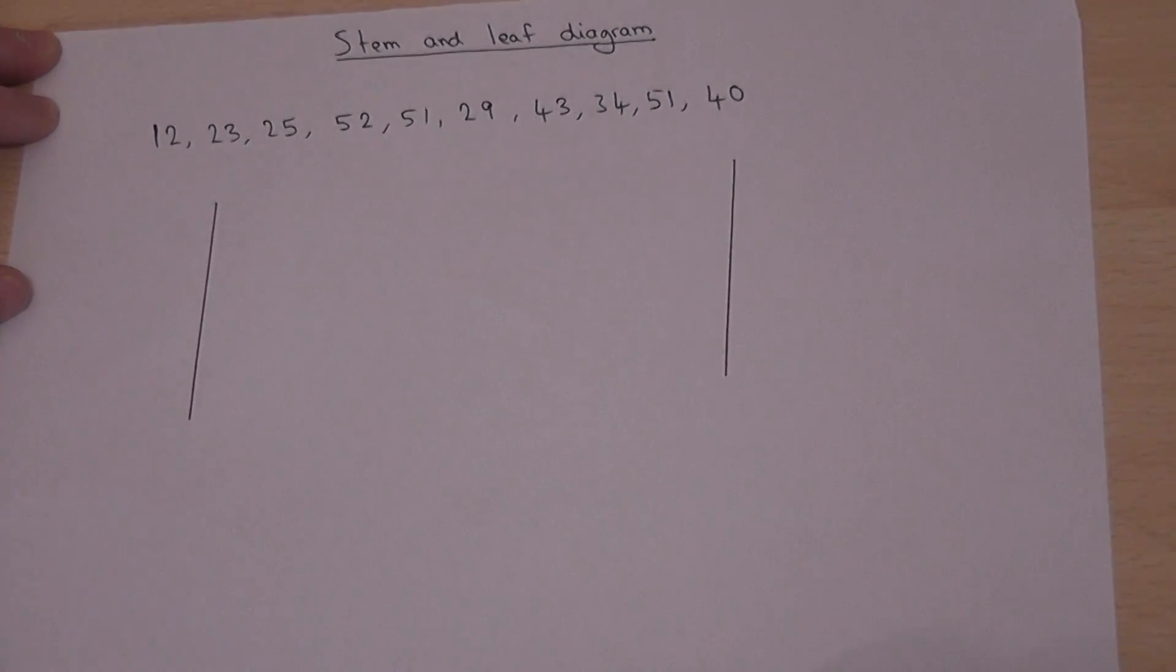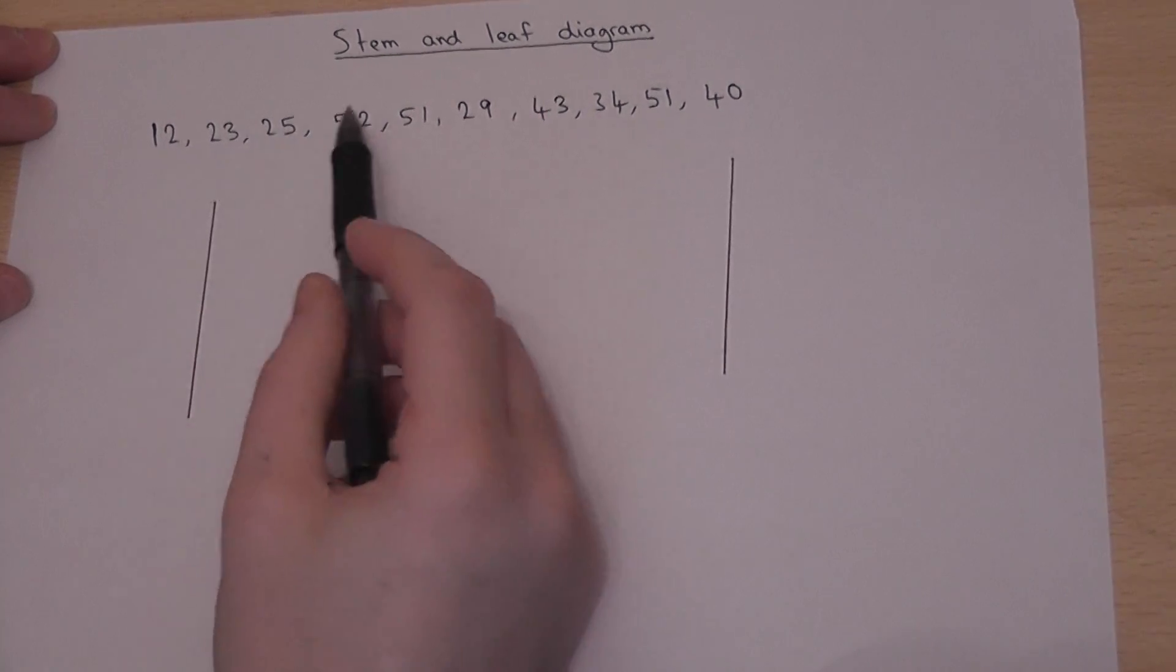A stem and leaf diagram is probably the most simple graph you can draw, and it's used to represent discrete data generally.